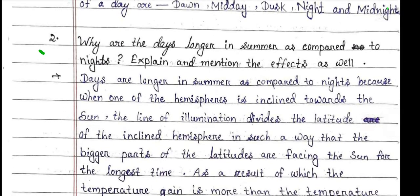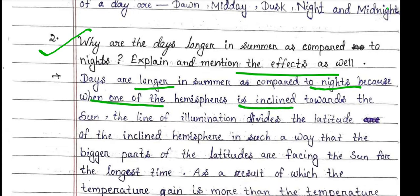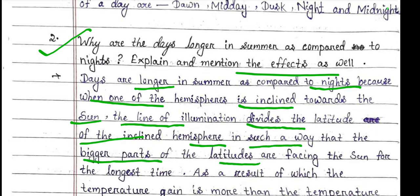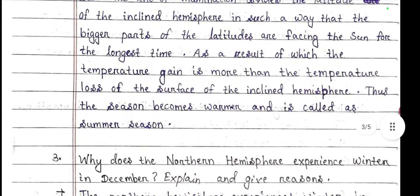Question number 2: Why are days longer in summer as compared to the nights? Days are longer in summer because when one of the hemispheres is inclined towards the Sun, the line of illumination divides the latitudes of the inclined hemisphere in such a way that the bigger part of the latitudes are facing the Sun for the longest time, resulting in more temperature gain.